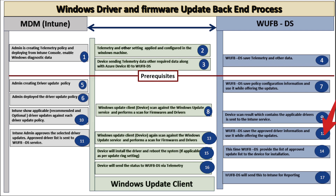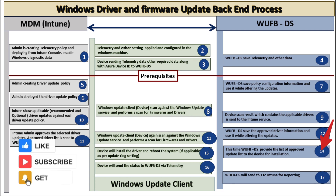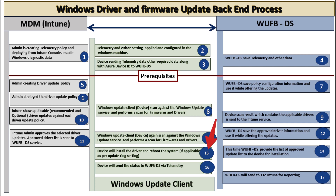At this point, the Windows Update for Business Deployment Service saves the approved driver information and uses it while offering updates. In the next step, the Windows Update client or device again scans against the Windows Update service and performs a scan for firmware and driver updates. This time, the Windows Update for Business Deployment Service provides the list of approved updates to the device, and the device installs the drivers and reboots as per the policy configured in the update settings.